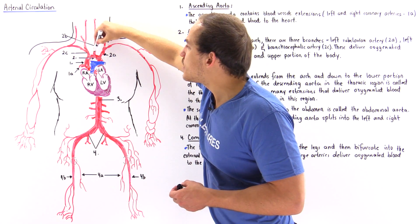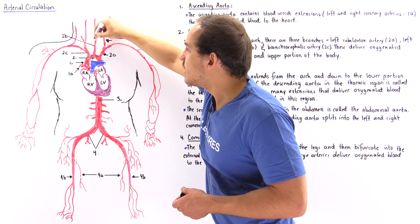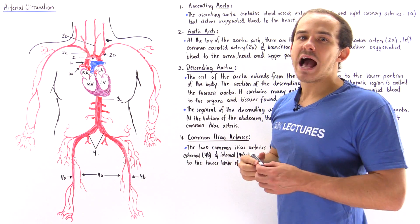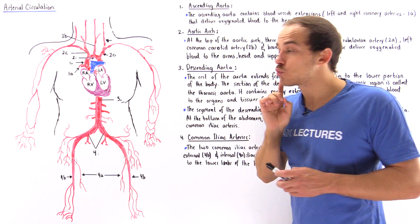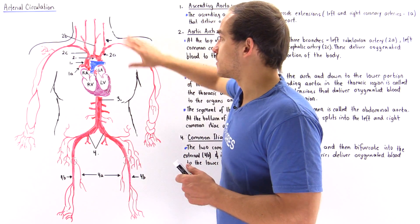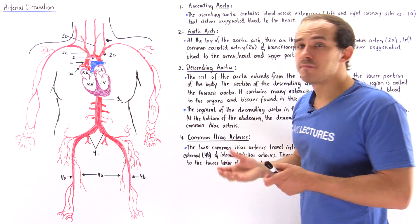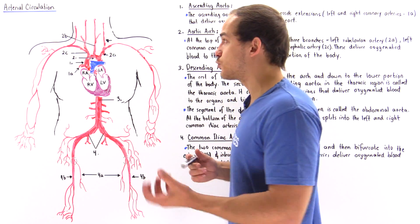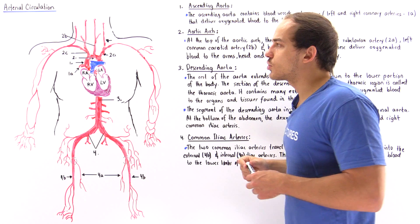The middle branching point on the arch, labeled 2b, is known as our left common carotid artery. This artery brings oxygenated, nutrient-filled blood to the head of our body. For example, the thyroid and the parathyroid glands receive blood from this common carotid artery.